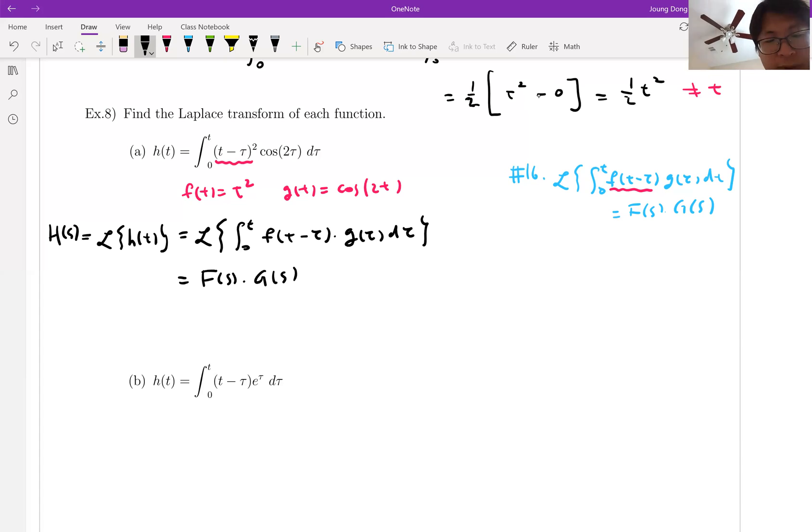Where f(s) is Laplace transform of function f(t) and g(s) is Laplace transform of g(t). Let me find this. What is Laplace transform of f(t) which is t squared? We can easily find this on the table, which is number three. The answer is two over s cubed.